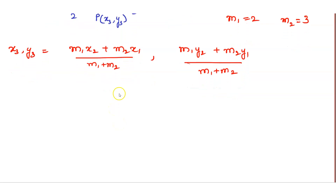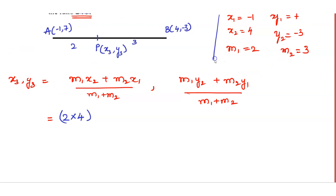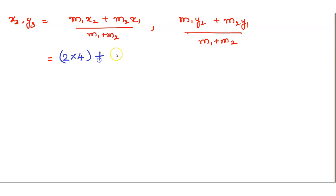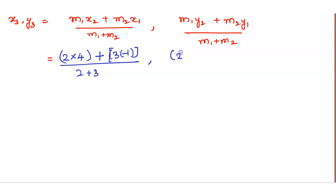Substituting: m1 = 2, x2 = 4, so 2 × 4; plus m2 = 3, x1 = -1, so 3 × (-1); whole divided by 2 + 3. Then for y: m1 = 2, y2 = -3, so 2 × (-3); plus m2 = 3, y1 = 7, so 3 × 7; divided by 2 + 3.